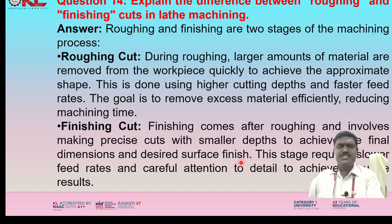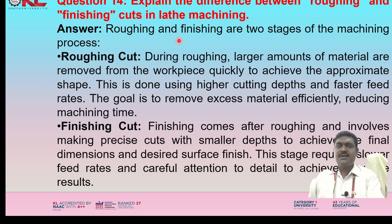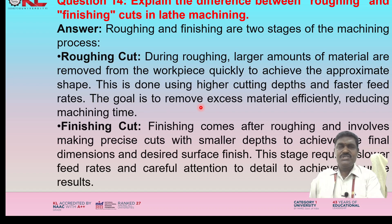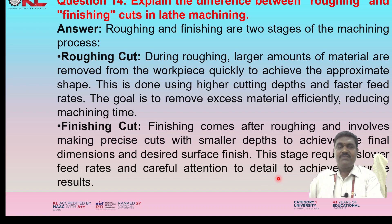Explain the difference between roughing and finishing cuts in lathe machining. Roughing and finishing are two stages of the machining process. Roughing cut: during roughing, larger amounts of material are removed from the workpiece quickly to achieve the approximate shape. This is done using higher cutting depth and faster feed rates, with the goal of removing excess material efficiently. Finishing cut: finishing comes after roughing and involves making precise cuts with smaller depths to achieve the final dimensions and desired surface finish, requiring slower feed rates and careful attention to detail.